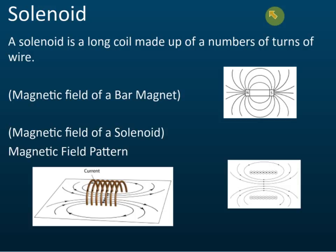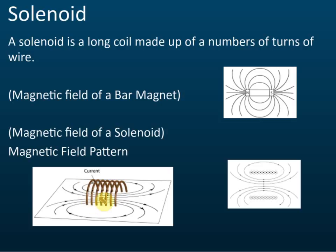A solenoid is a long coil made up of a number of turns of wire. We wind wire into a coil. If there's just one coil, we say it's a flat coil. But if we have more than one coil, it becomes a solenoid.